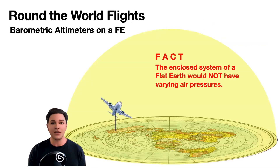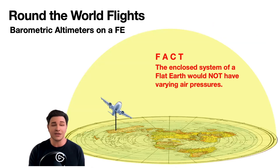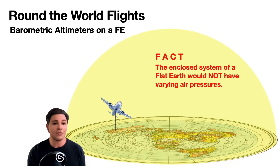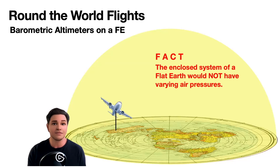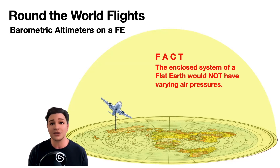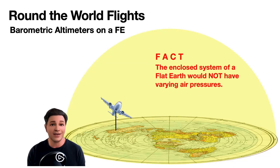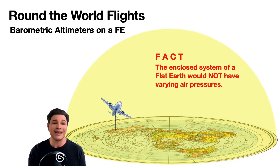In a closed flat Earth with a dome — the firmament — the air pressure would be the same throughout the whole enclosed system. The air pressure would not be denser near the surface and less dense higher up if it's enclosed. Flat Earthers talk about the firmament being solid and unbreakable, but if that were the case, air pressure would be identical everywhere. So you'd have to tell all international flights that their barometric altimeter just doesn't work on a flat Earth, because air pressure would not change in an enclosed system. Game over for flat Earthers using examples from international flights.